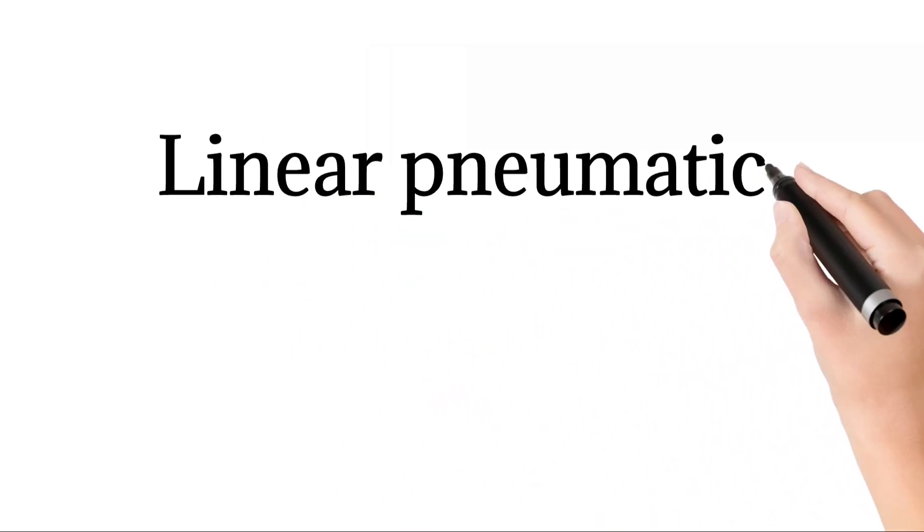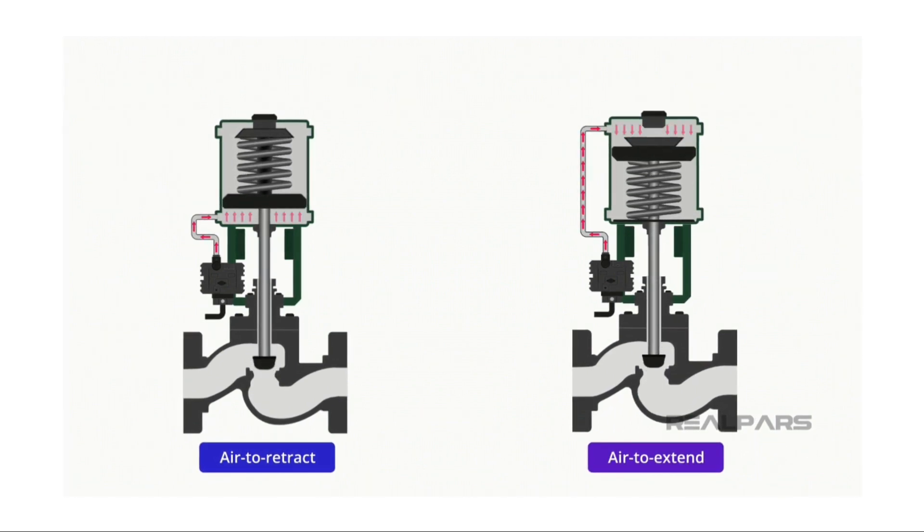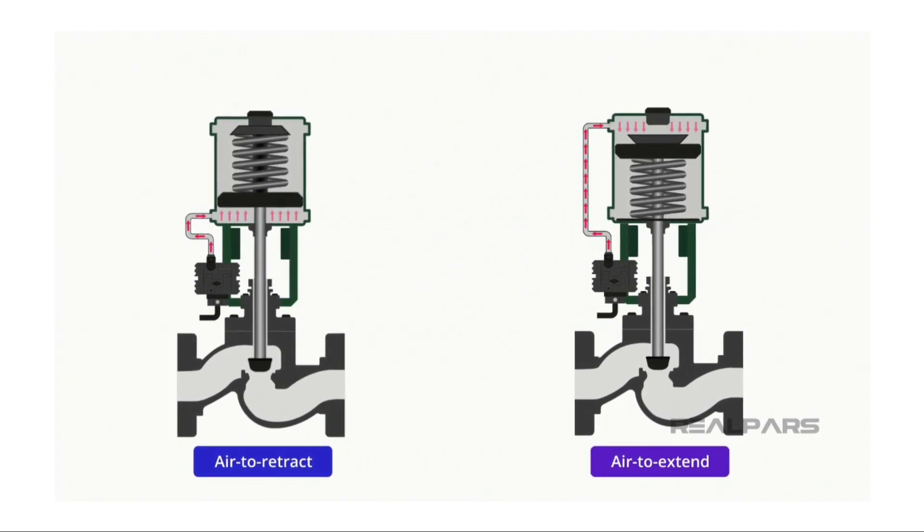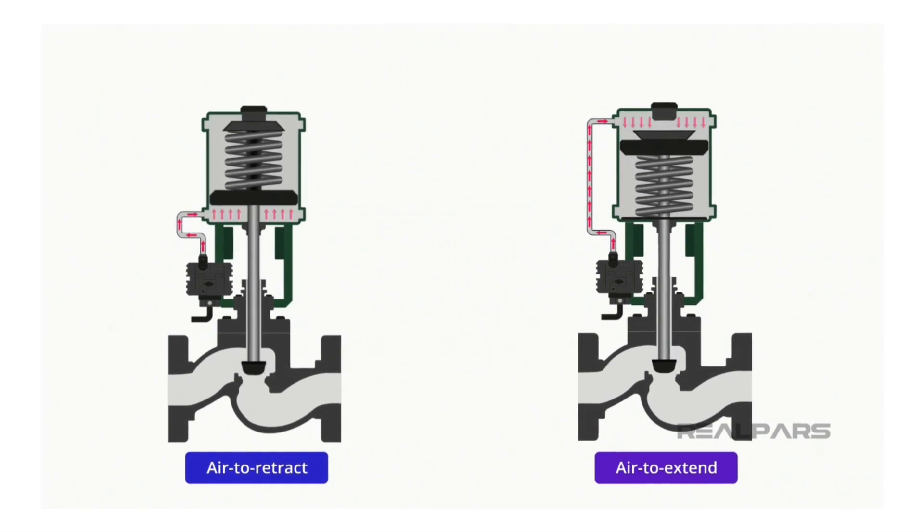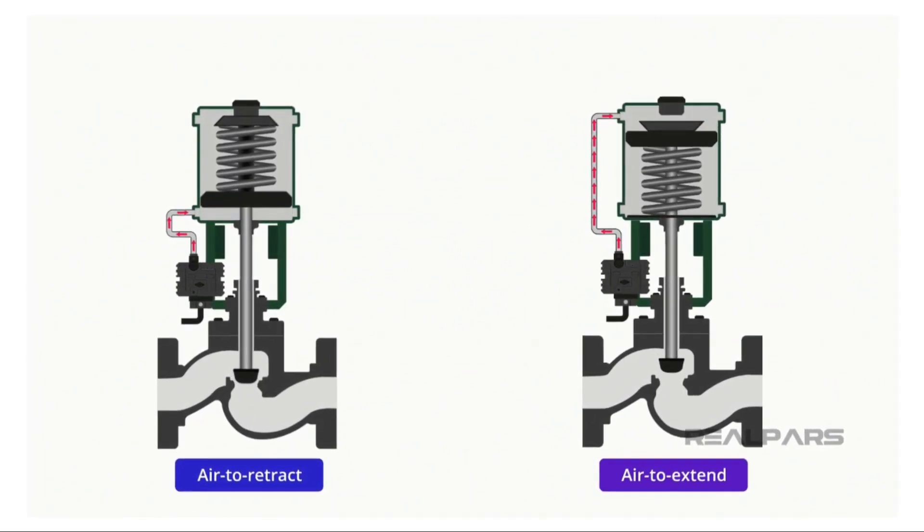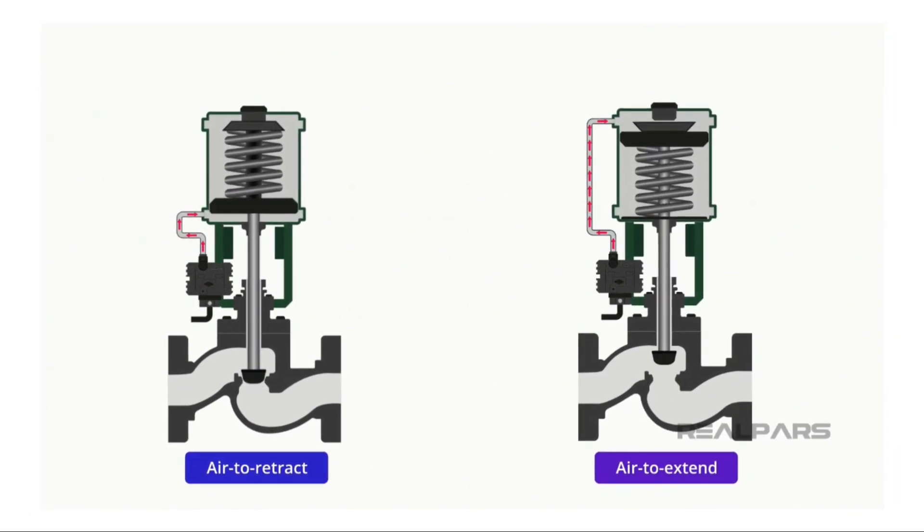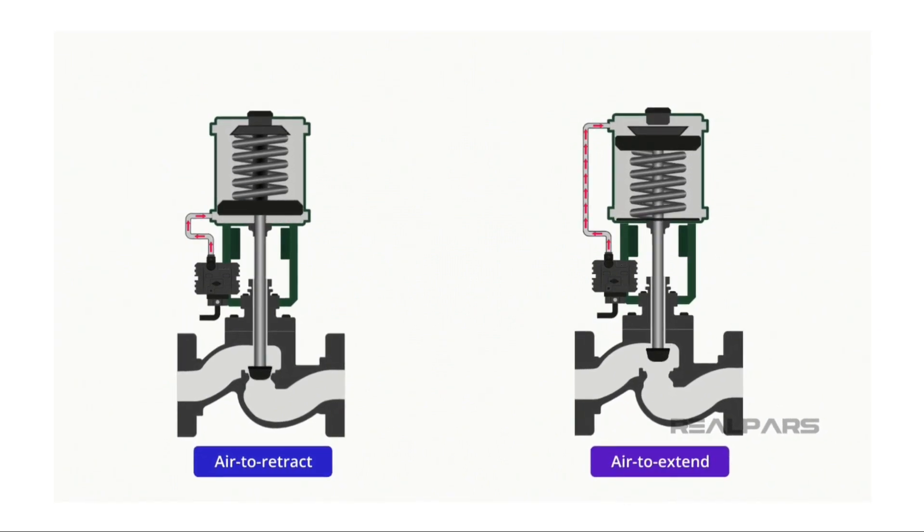Linear pneumatic actuator. In the linear pneumatic actuator category, the spring diaphragm style and the piston style are very common. The piston style pneumatic actuator utilizes a piston inside a cylinder. The movement of the piston is caused by applying pneumatic pressure thereby moving the piston upwards. Removing the pneumatic pressure causes the piston to move downward due to the pressure of the spring. This motion is referred to as air to retract.